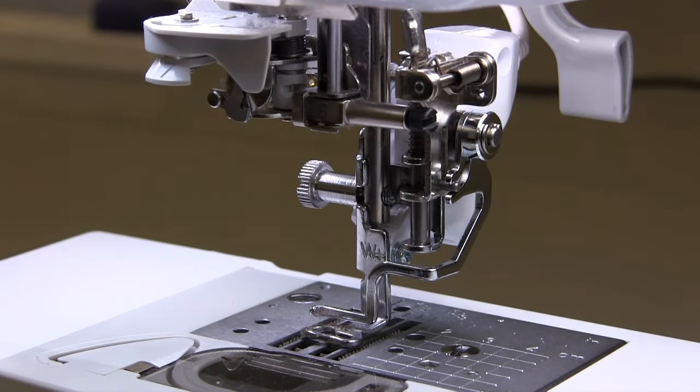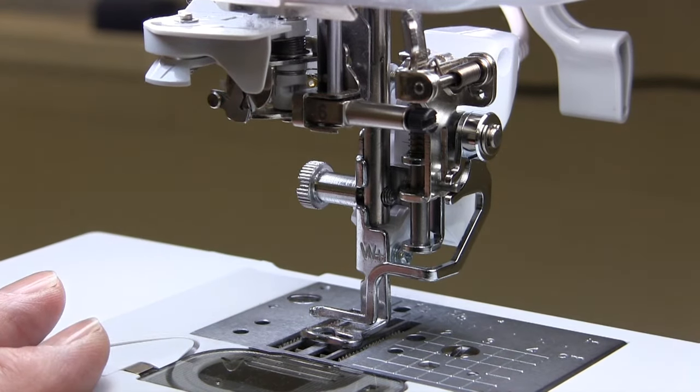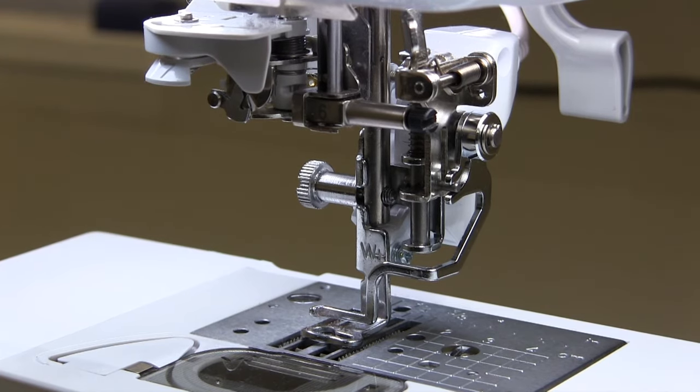To adjust the threader while it's still attached to the machine, remove the needle from the machine and press your threader button on the machine so that the mechanism starts to come down. Then switch the machine off as it gets to a point whereby you can access the threader itself.